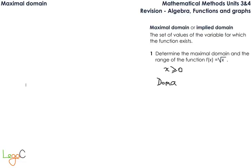Which means that the maximal domain of this function is going to be from 0 to infinity. Either notation is correct, either x greater than or equal to 0, or the domain from 0 to infinity. Just make sure that you have a square bracket at this end because of the greater than or equal to sign.